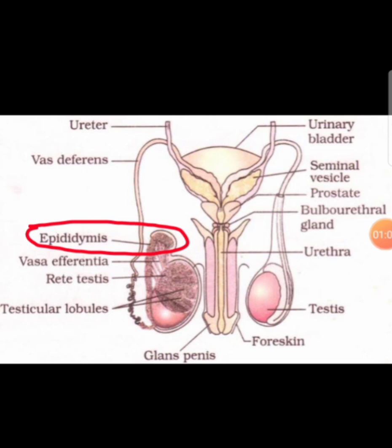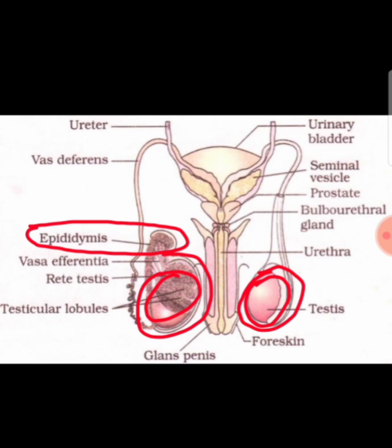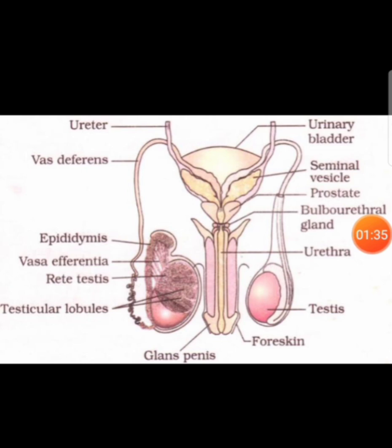Remember that sperms attain motility and maturity after reaching the epididymis. Also remember that the testes are covered by a loose layer called the scrotum. The main function of the scrotum is to maintain a temperature 2 to 2.5 degrees lesser than body temperature, which helps in spermatogenesis. You can also find accessory glands like the bulbourethral gland, prostate gland, and seminal vesicles, which help in the production of semen.